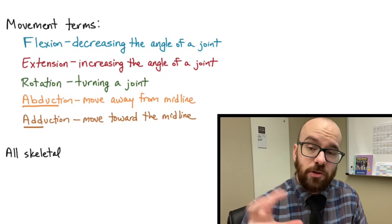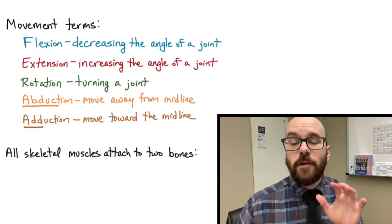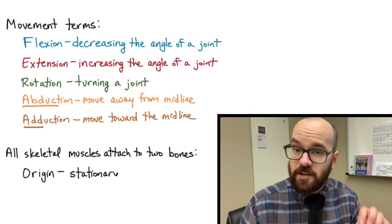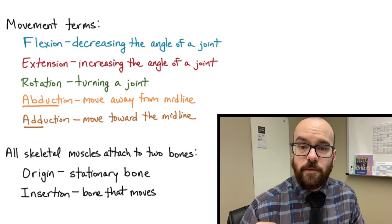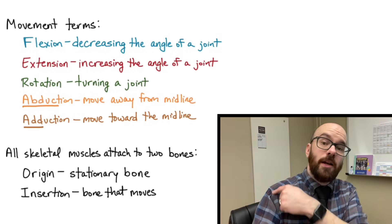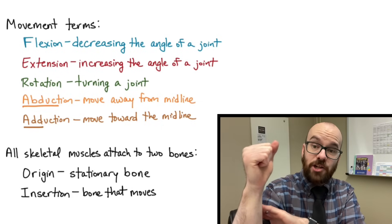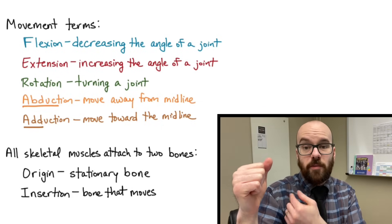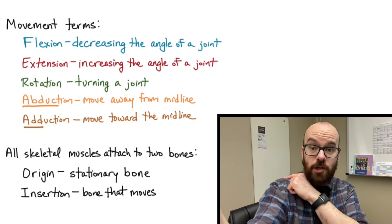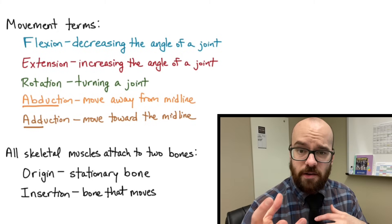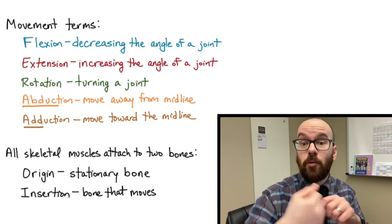All muscles connect to at least two points, usually bones. The two connection points have names: the origin is the bone the muscle attaches to that doesn't move, and the insertion is the bone that does move. For example, the biceps brachii connects from the scapula down to the radius. When it contracts, the radius moves — so the radius is the insertion and the scapula is the origin. It's easiest to identify the insertion first, since it's easiest to tell what's moving.